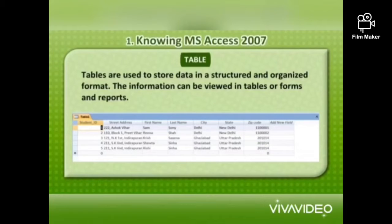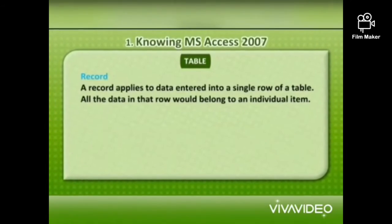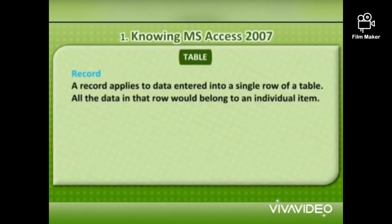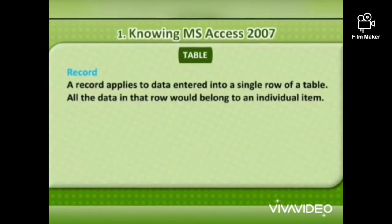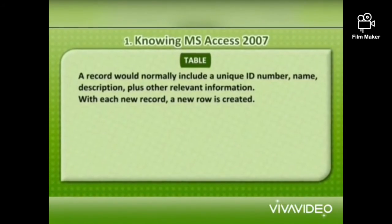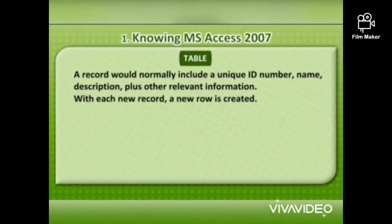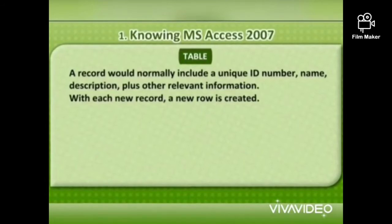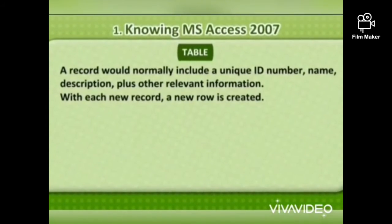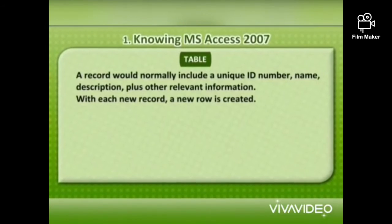Tables are used to store data in a structured and organized format. The information can be viewed in table, form, and reports. A record applies to data entered into a single row of a table. All the data in that row would belong to an individual item. A record will normally include a unique ID number, name, description and other relevant information. With each new record, a new row is created.